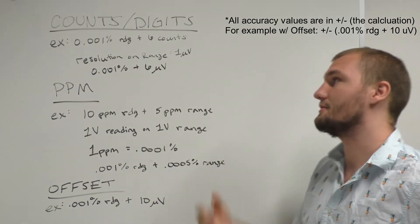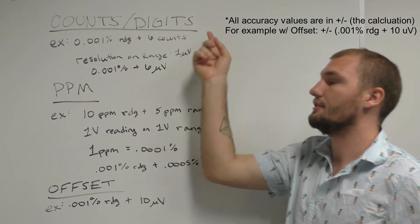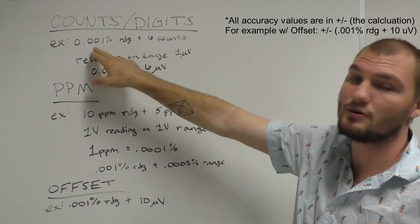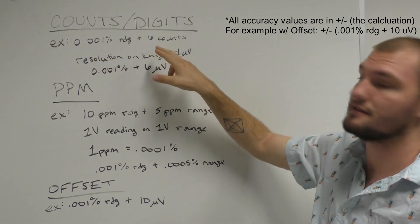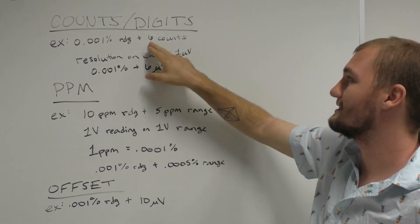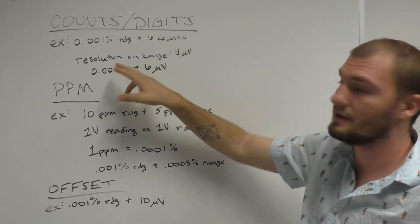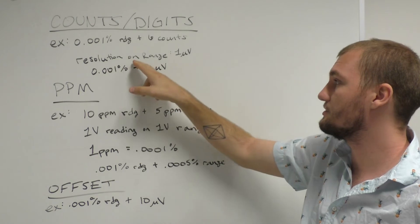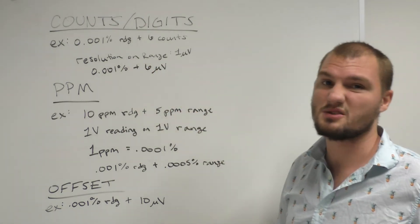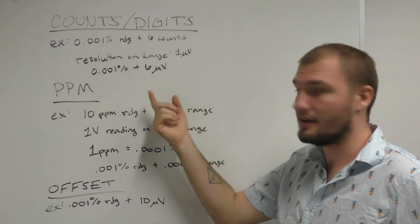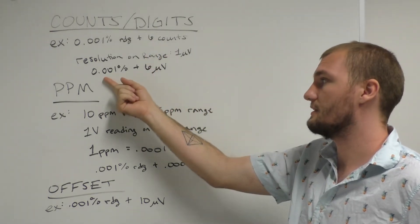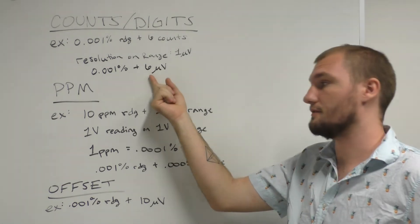Okay, so in order to calculate accuracy when you see counts or digits in the spec, you're going to do the reading percentage normally, so it would still be .001% of the reading value, but the range is different. So in this case, you're going to look and see 6 counts. The way that we calculate this is taking the resolution on that particular range, which we'll say it's 1 microvolts here, and we'll multiply it by the number of counts. So we end up with a final accuracy spec of .001% of the reading plus 6 microvolts.